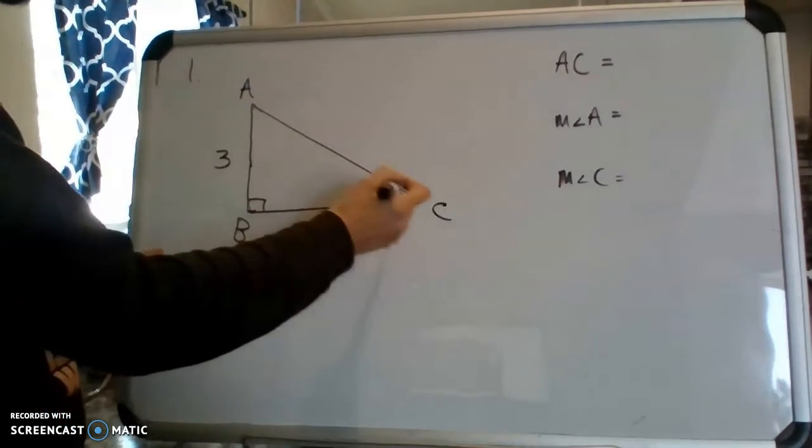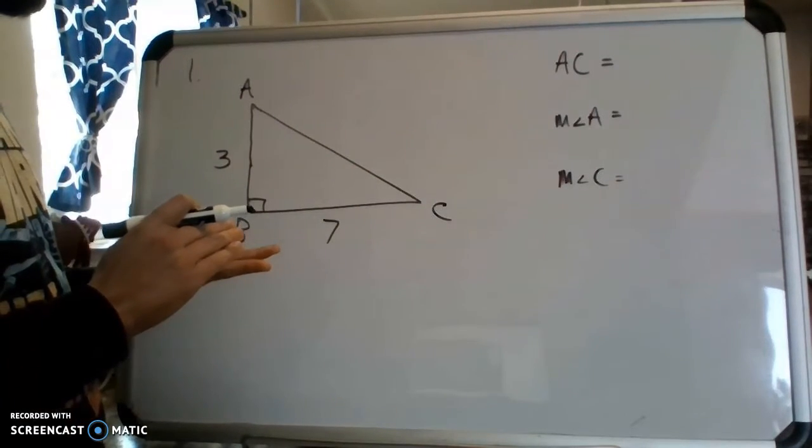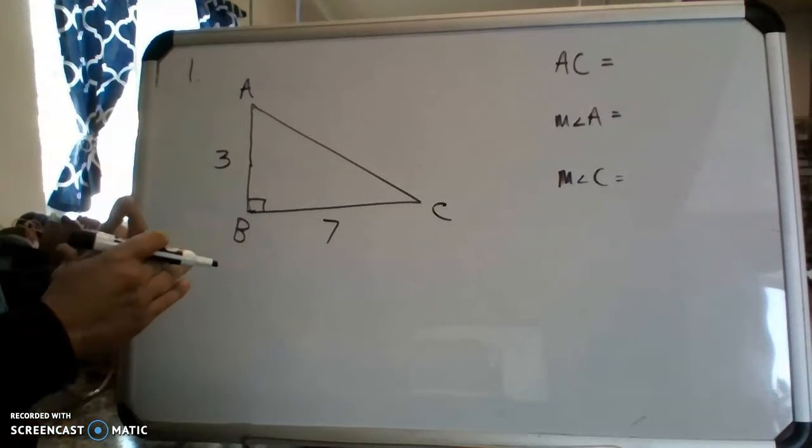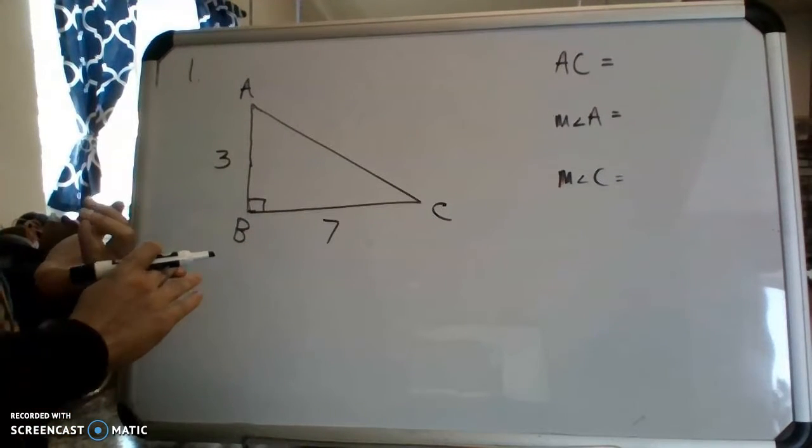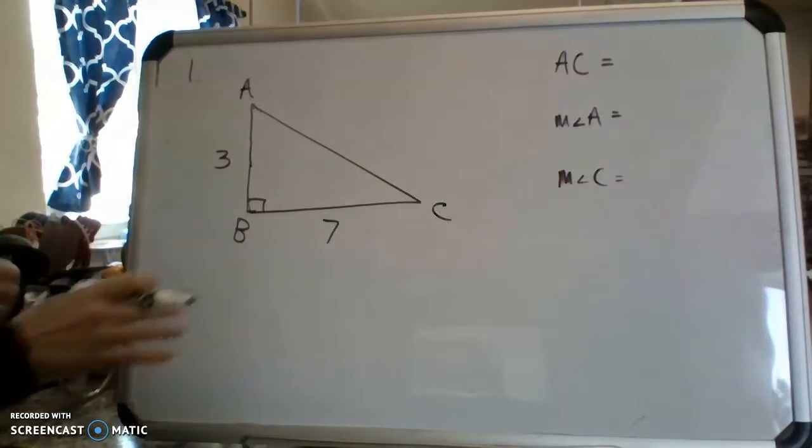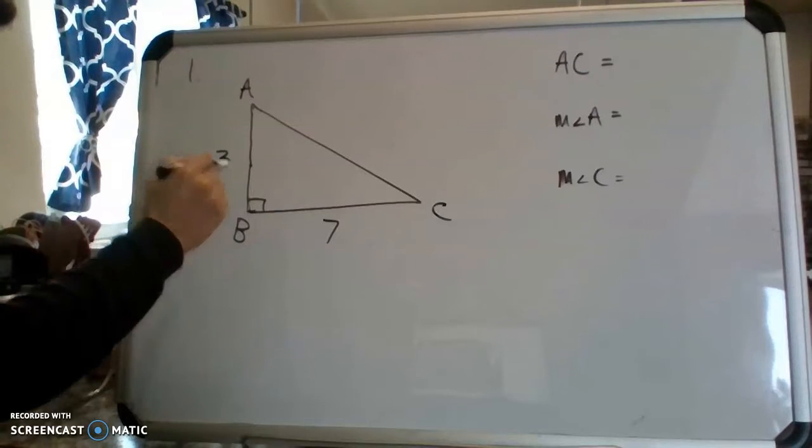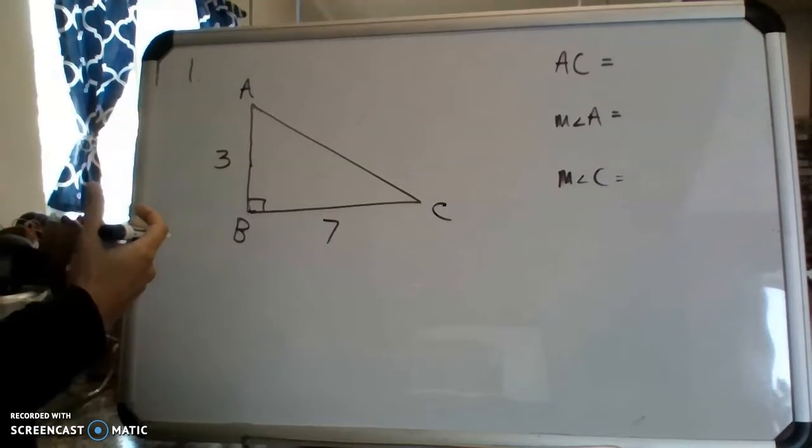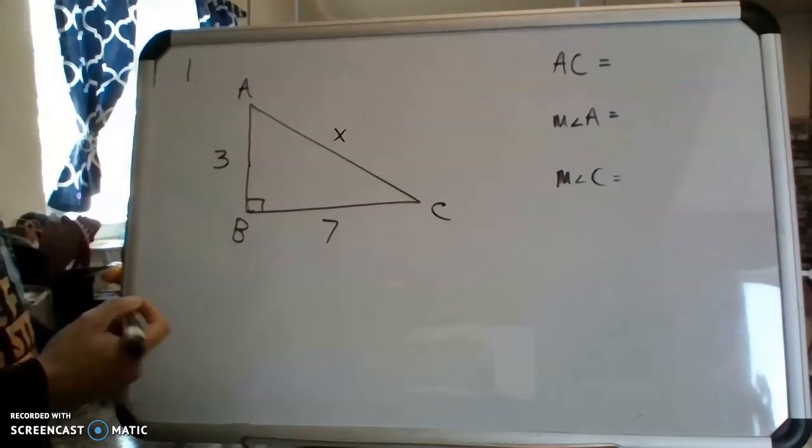If we're trying to solve a side length we've got the Pythagorean theorem. We've got special right triangles 30, 60, 90 and 45, 45, 90. And then we've also got sine, cosine, and tangent. As you look at this triangle the first thing I notice is that I know two of the sides of the triangle already. That's a clue to me that I can use Pythagorean theorem to solve for the third side.